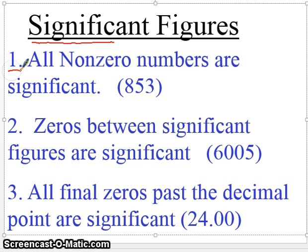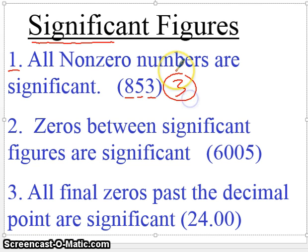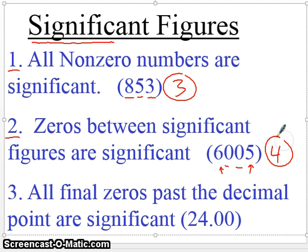Rule number one is that all non-zero numbers are significant — non-zero meaning anything from 1 to 9. Notice all three of these would be significant; in this case, we get three significant digits. Rule two says that zeros between significant figures are significant. These two zeros, since they're between a 6 and a 5, are both significant. So this number has four significant digits — all four of these are significant.